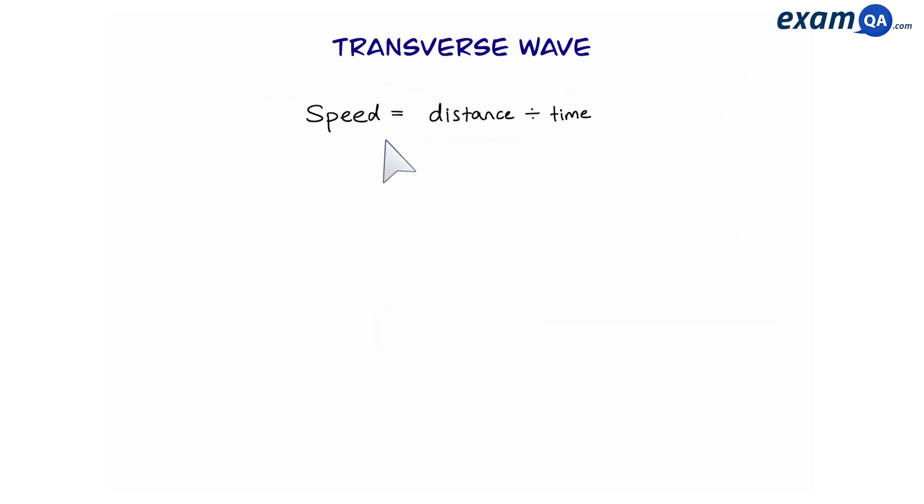Now one way to work out speed is to do distance divided by time. However, for waves there's another way that we can work out speed and that is equal to frequency times wavelength. But we want to focus on the second one.